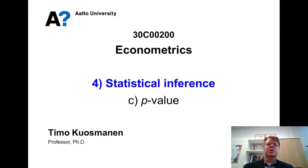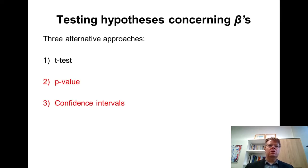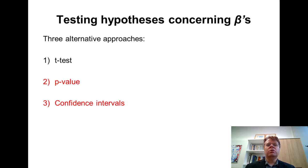In the third lesson on statistical inferences, we consider an alternative way of testing hypotheses using a p-value, and I will also come back to the confidence intervals. We have already considered the classic t-test in the previous lesson, and now I will expand it to two alternative ways of testing hypotheses, starting from the so-called p-value.